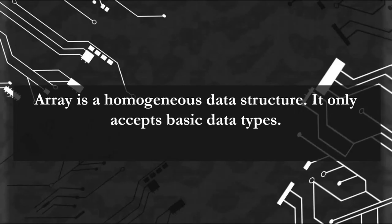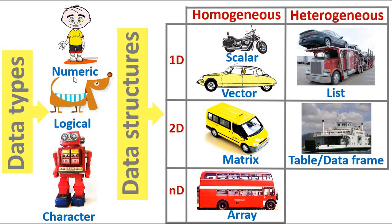Array also is a homogeneous data structure. It only accepts basic data types. For example, an array can only accept numeric, logical, and character. It can't accept matrix inside of it or a vector. A Double Decker Bus can't accept minibus inside of it or a car inside of it.